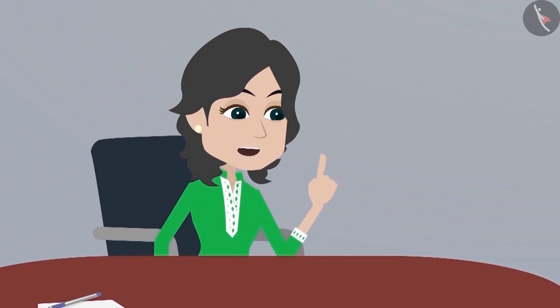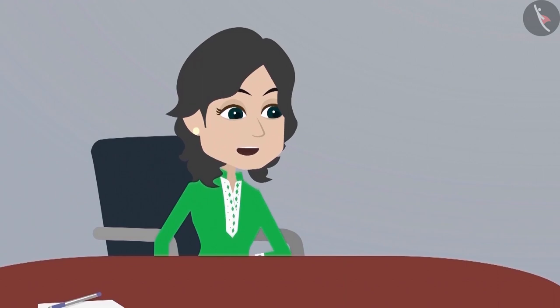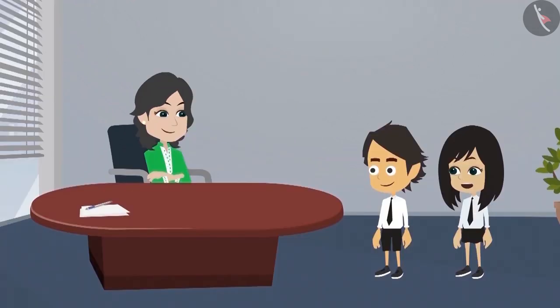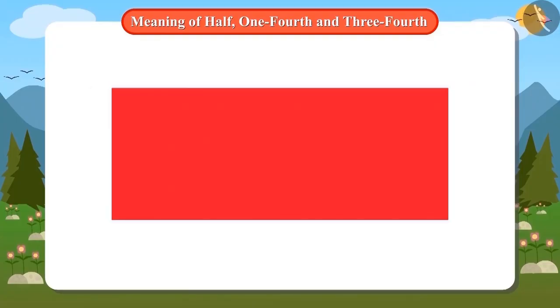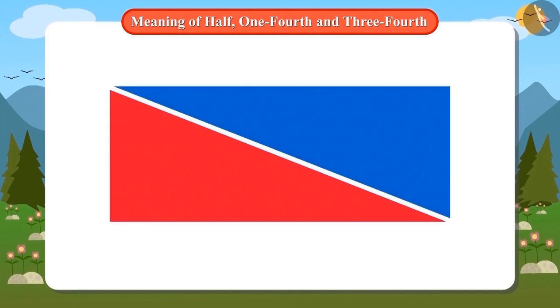They are also written in numbers. Writing in digits also makes it easier to add and subtract them. How are they written in numbers, madam? I will show you how. Look, this is a rectangle. When it is divided into two equal parts, then one part is called half of this entire shape.